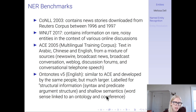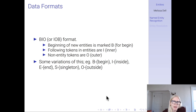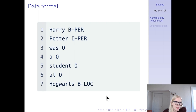The data format we use for NER is typically called the BIO format. If we have a span of text, the beginning of a new entity is marked with a B for begin, following tokens are marked with an I for inner, and non-entity tokens are marked with an O. This is an example from CoNLL — you can see 'Harry Potter': Harry is the beginning, Potter is inner, with the type 'person'. The O tokens are things that are not entities, and you can also see the beginning of a location.